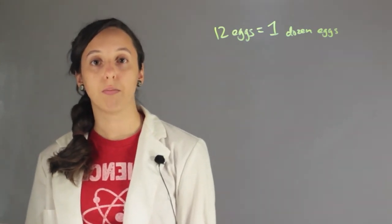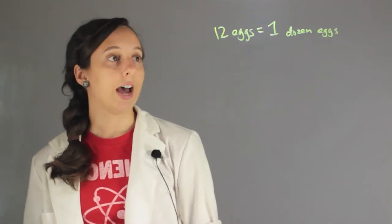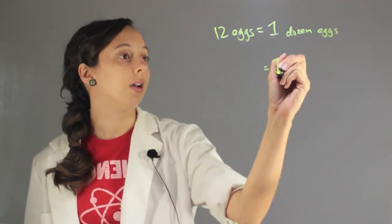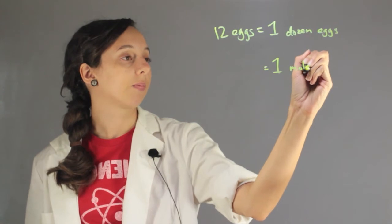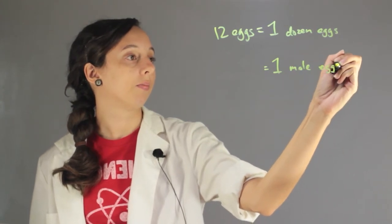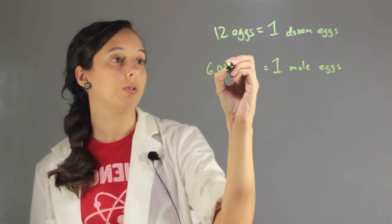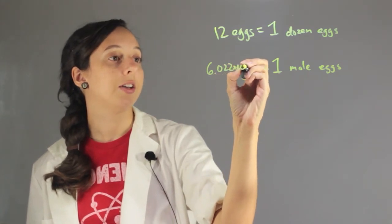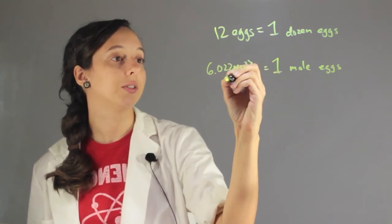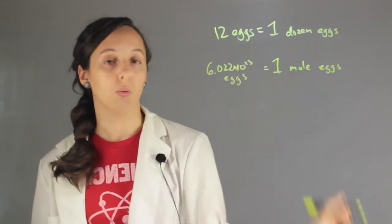And this is exactly what the mole does. Except if I was going to say that I have one mole of eggs, it would mean that I had 6.022 times 10 to the 23rd eggs. So way more.